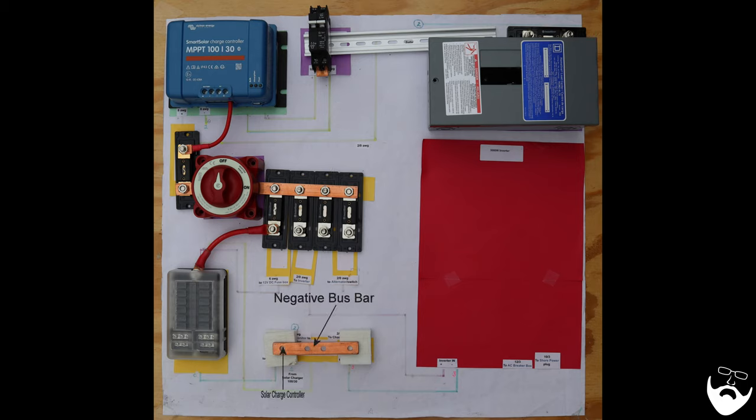Looking at the negative bus bar, an 8 gauge wire comes from the solar charge controller to the bus bar. A 6 gauge wire goes to the DC fuse box. A 2/0 wire goes to the battery monitor and onto the batteries.